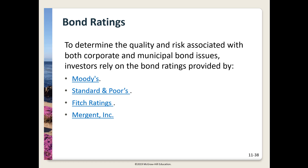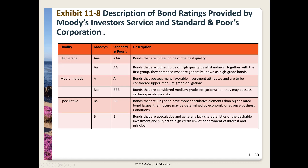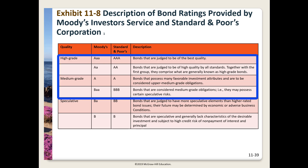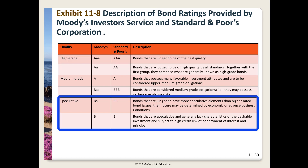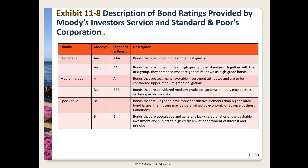Bonds are rated for quality and associated risk of default by rating agencies — the most well-known are Moody's and S&P. Be aware that firms pay the rating agencies to rate their bonds; a better rating means a lower interest rate they have to pay. Bond rating agencies have received bad press for not being quick to recognize problems and downgrade bonds. Exhibit 11-8 on page 371 describes the ratings used by the two largest agencies. Bonds rated Baa or BBB and above are considered investment grade; below that are considered junk or high yield.